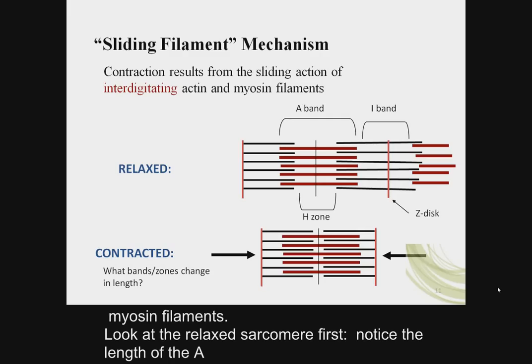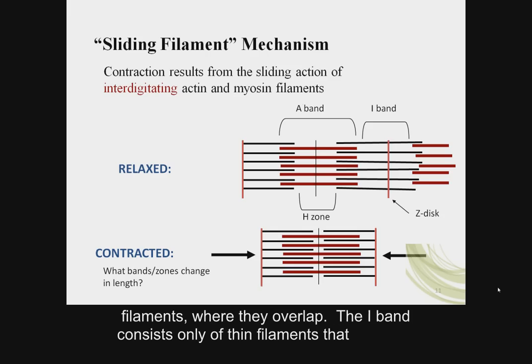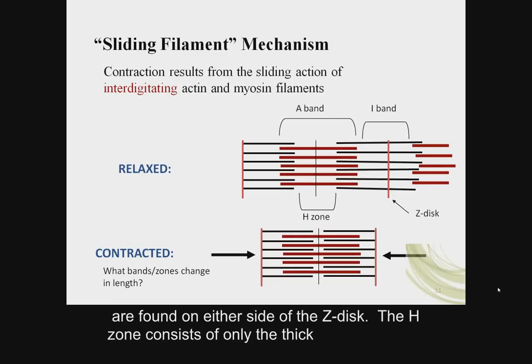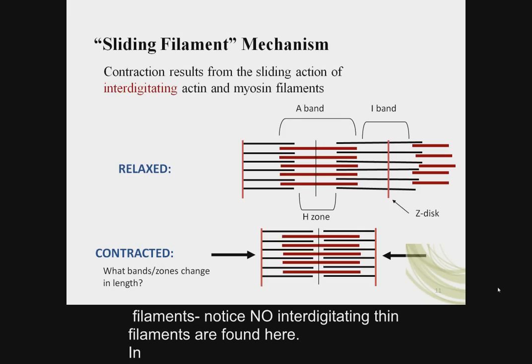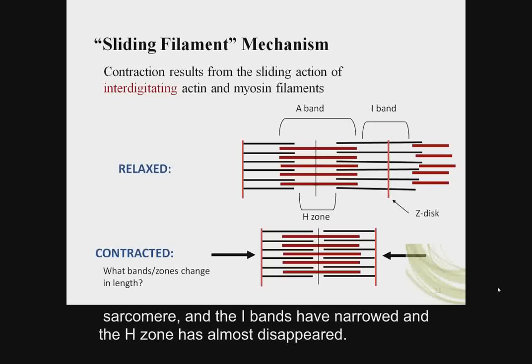Look at the relaxed sarcomere first. The A band consists of the thick filaments plus a portion of the thin filaments where they overlap. The I band consists only of thin filaments found on either side of the Z disc. The H zone consists of only thick filaments, with no interdigitating thin filaments. In the contracted state, the thin filaments have been pulled toward the center of the sarcomere, the I bands have narrowed, and the H zone has almost disappeared.